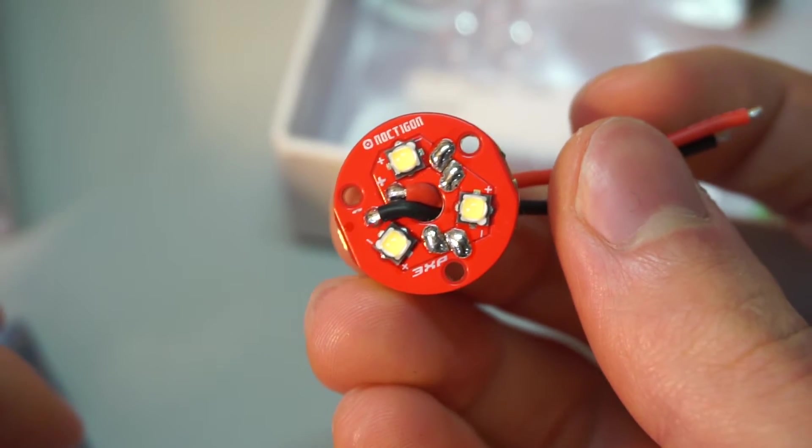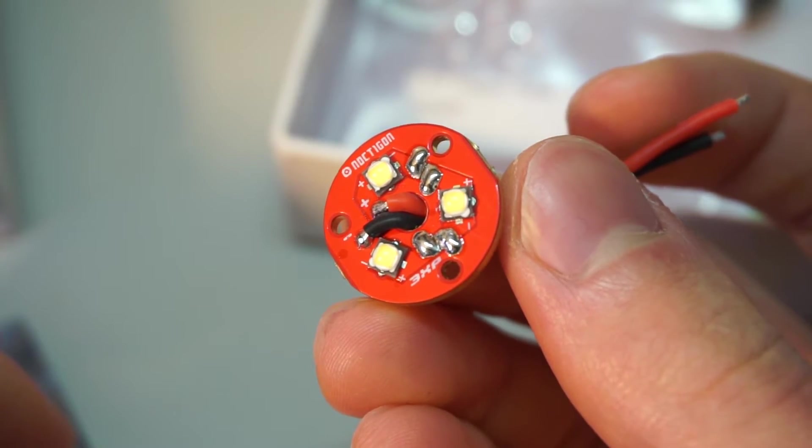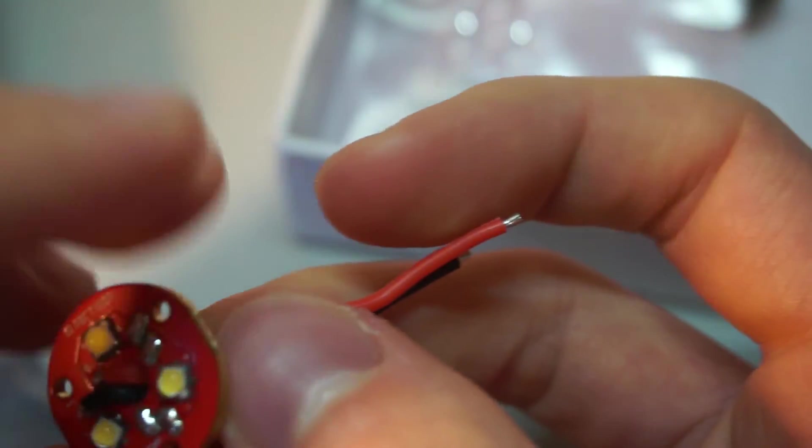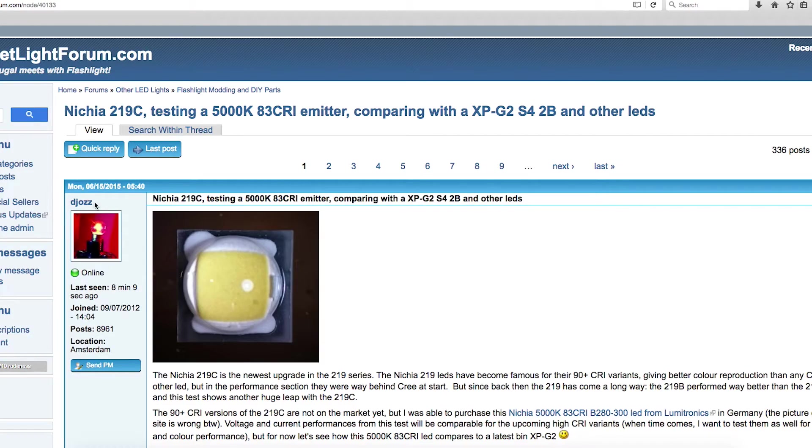Now these triple LED boards have become really popular lately because LEDs are a lot more efficient at lower currents, and I'll illustrate that using this graph here made by a member of Budget Light Forum.